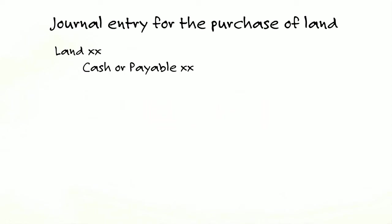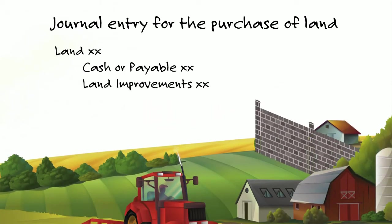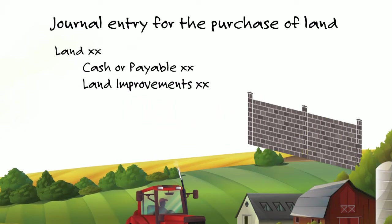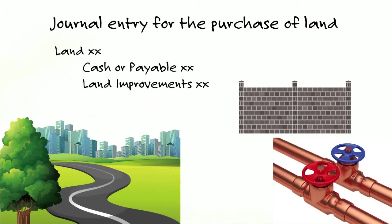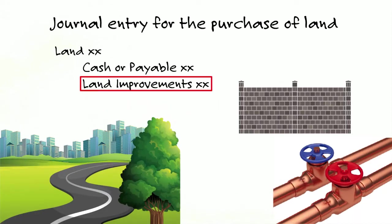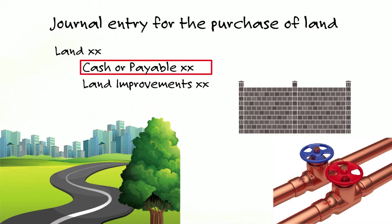If a new fence is needed on a farm, land improvements — whether it's a fence, a private road, a water system, or a sidewalk — you include the cost, but it must be recorded as a separate asset. Why? Because those land improvements are subject to depreciation, and the land itself is not. So land improvements have their own separate category. Your journal entry: debit land improvements, credit cash or payable.